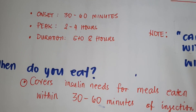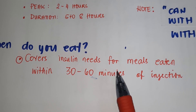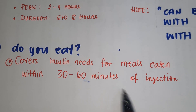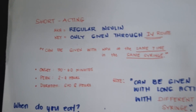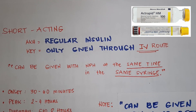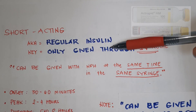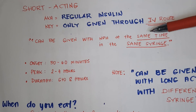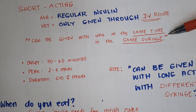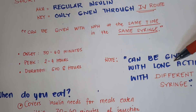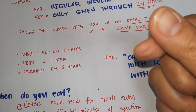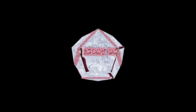When does the patient eat with short acting insulin? It covers insulin needs for meals eaten within 30 to 60 minutes of injection. Short acting, also known as regular insulin, is given through IV route, can be given with NPH in the same syringe, and with long acting in a different syringe.